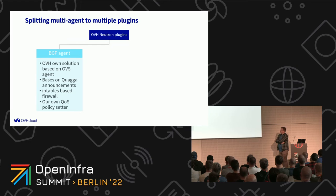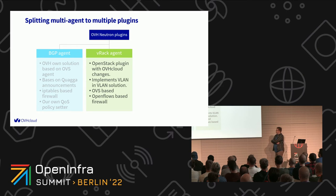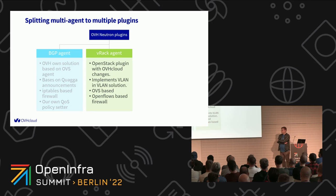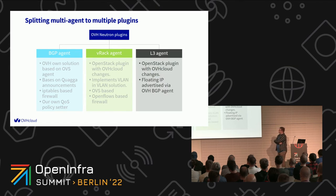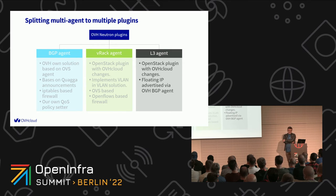How did we achieve that? The first step was to split the agent into multiple Neutron plugins. The first is a BGP agent — completely our own OVH solution — using Quagga software for IP announcement. The second is the VRack agent, which is the plugin using OpenStack's VLAN connectivity but with our VLAN-in-VLAN solution. And of course we needed to introduce the L3 agent to prepare L3 connectivity and services for our customers. The plan was to kill two birds with one stone: upgrade agents to Stein and introduce L3 services. This time we are smarter because we implemented our agents as different Neutron plugins, making future upgrades much easier.